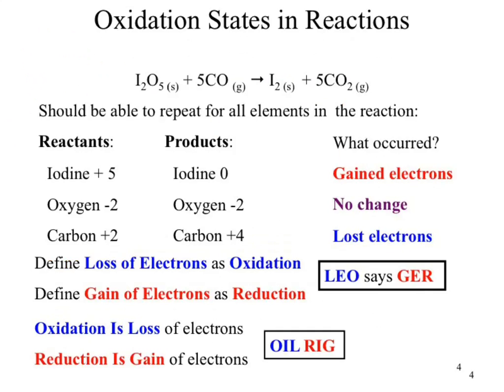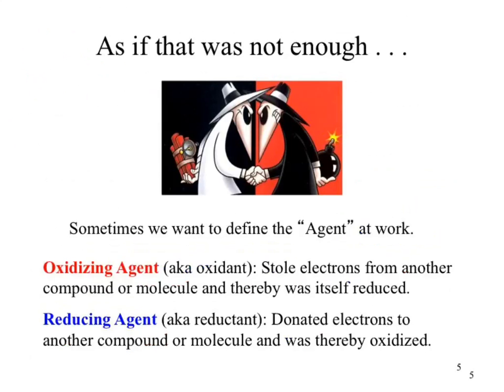Now we've got oxidation states, and we made it more difficult by applying this oxidation-reduction thing. They came up with the idea of an oxidizing agent and a reducing agent — they are backwards words. What we're saying by an agent is that that agent is causing something else to do that. So if we're looking at an oxidizing agent, that agent caused something else to be oxidized. Well, if something else was oxidized, what had to happen to the agent? It was reduced. If we've got a reducing agent, that agent caused something else to be reduced — and it was oxidized.